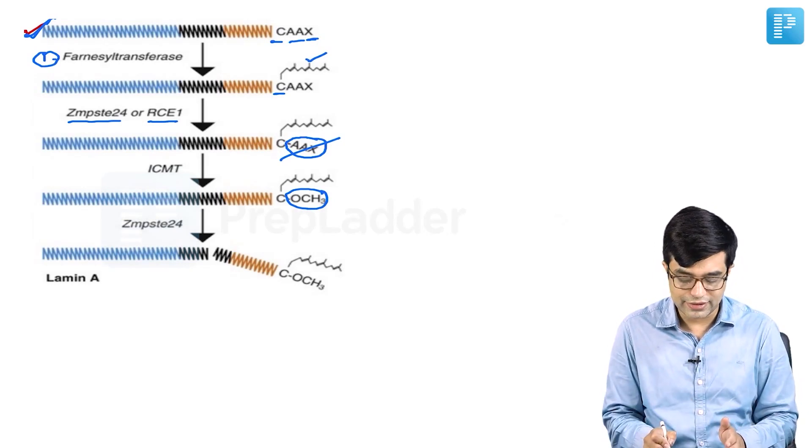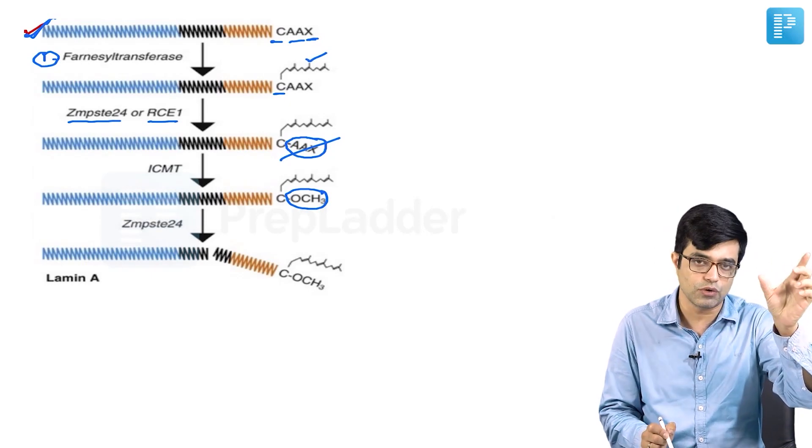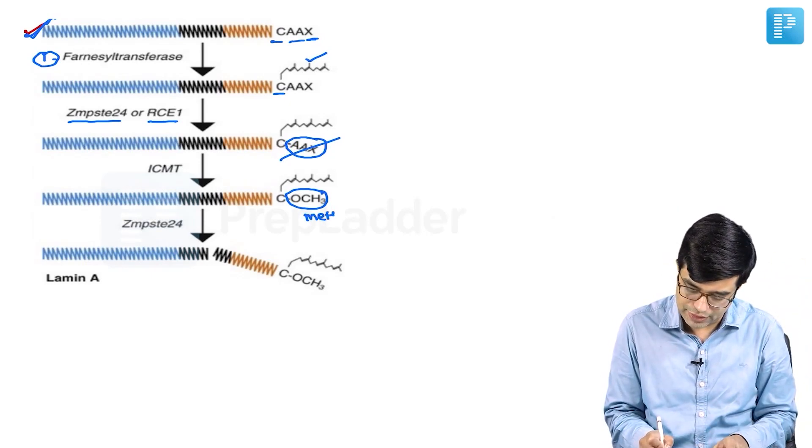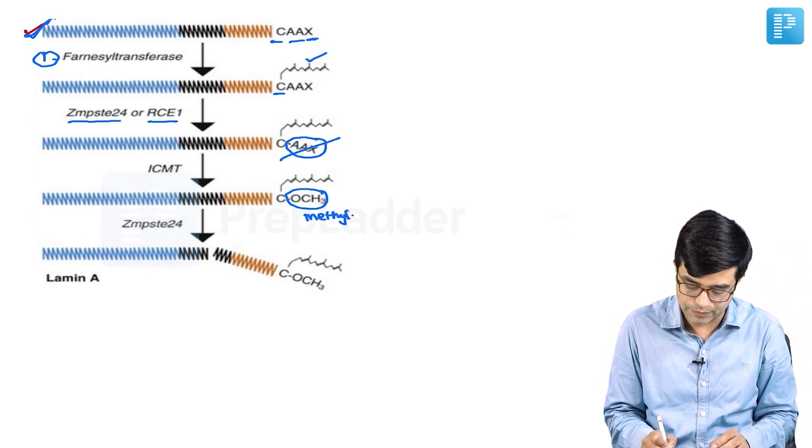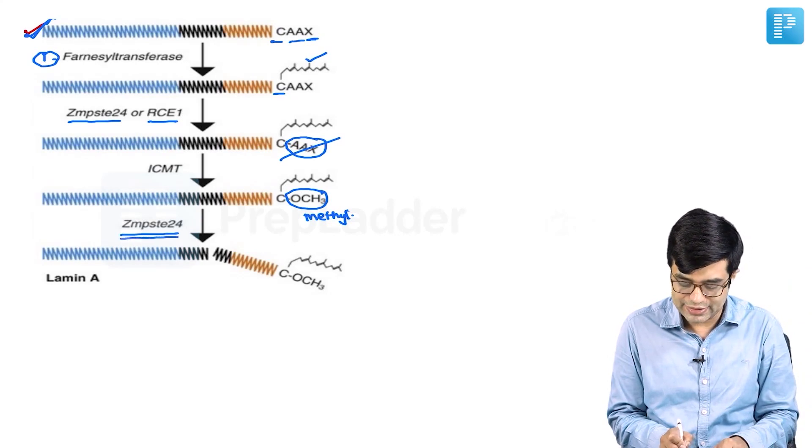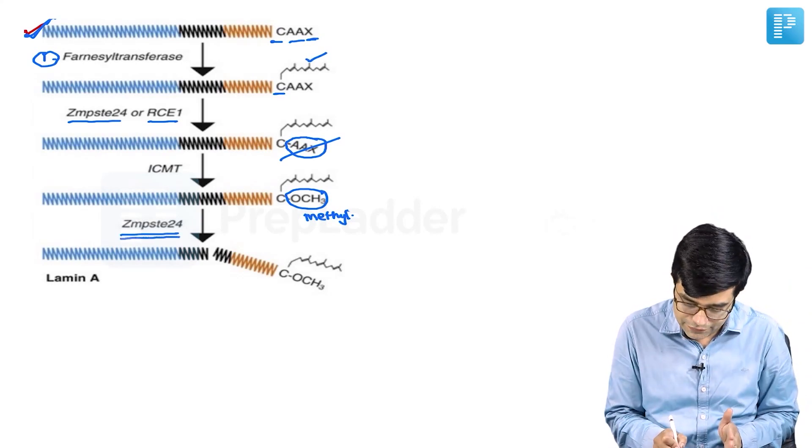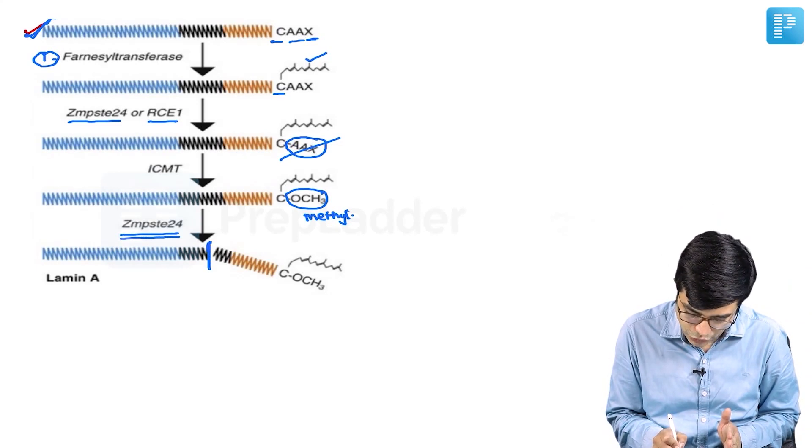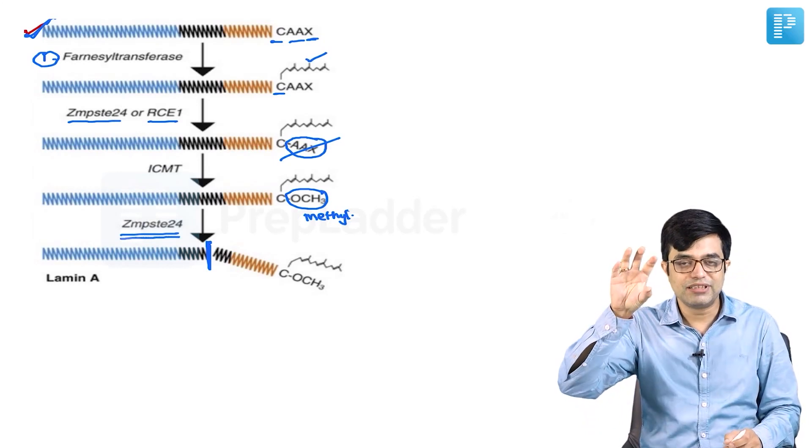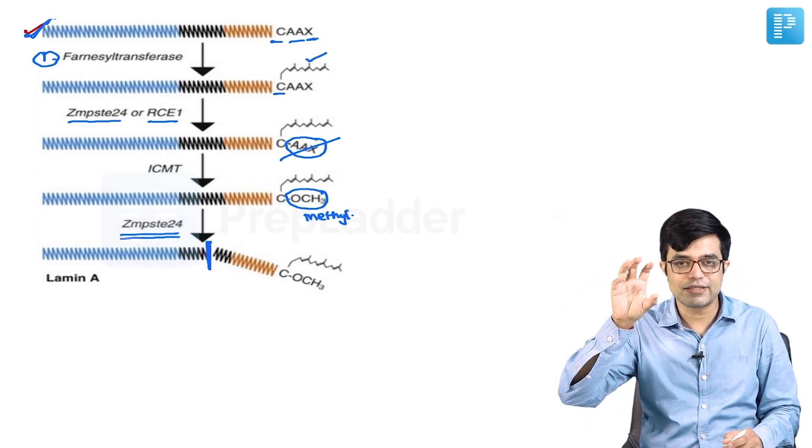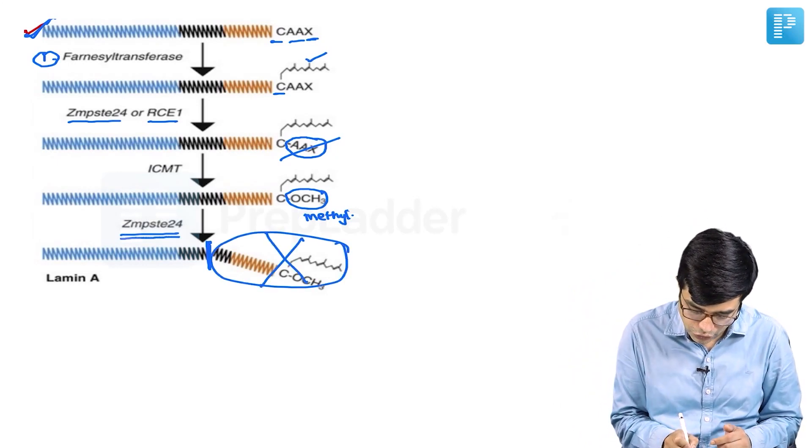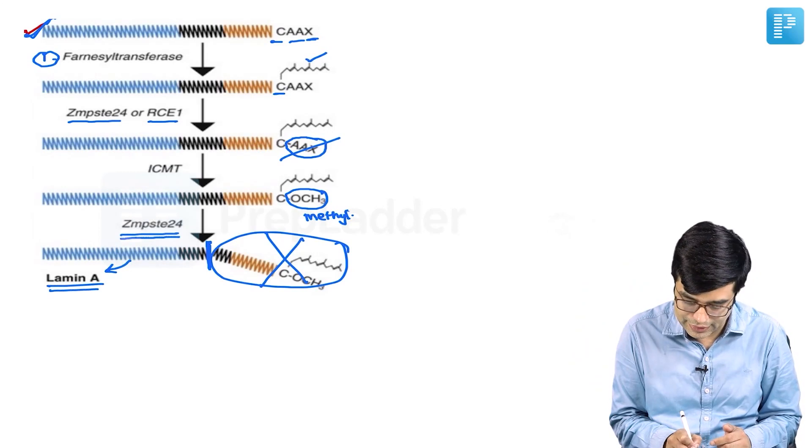There is the cysteine molecule with the farnesylated group and methylation, this methyl group which has been attached. It is also called a carboxymethyl group. After that, ZMPSTE24 again acts and cleaves it midway from this black colored part, so that the terminal end, the methyl group and the farnesylated group all get removed. This forms the active protein called lamin A.